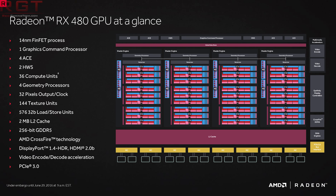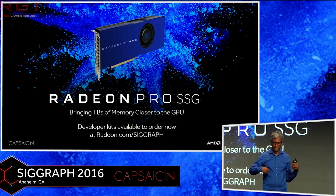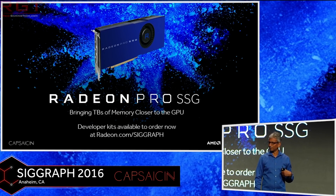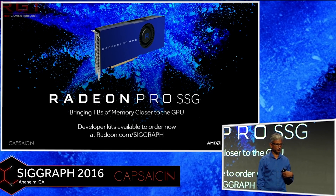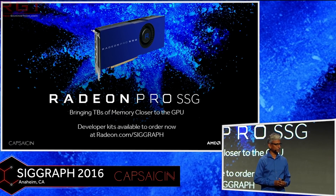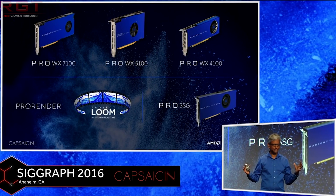AMD also pointed out Radeon SSG, which according to AMD themselves is a new category of product. How it works is it connects a high-bandwidth piece of memory via a 16-lane PCIe connection to a high-performance SSD. So it's a three-way connection: GPU, GPU memory, and host CPU. It's very important to note that this memory technology — the Radeon SSG — is not going to be used any time soon for gaming. We'll go more into why that is and why memory with games is a problem, according to AMD.